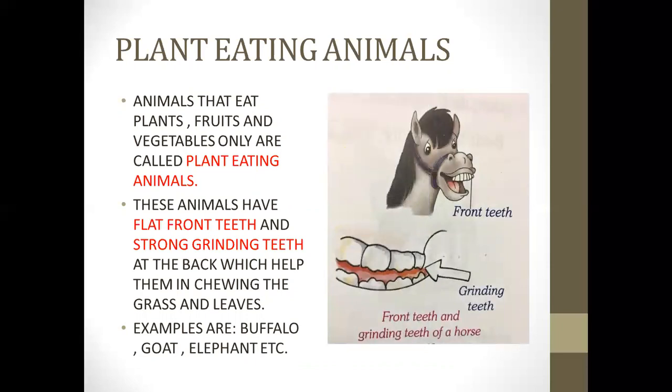Now here in this picture they have shown you the teeth of a horse. Look carefully, these are the grinding thick teeth, they are strong grinding teeth which help them to chew leaves and grass. And here in this picture they have shown the front teeth which are flat to cut the leaves.